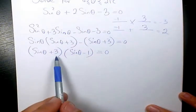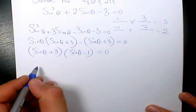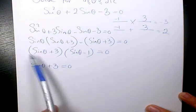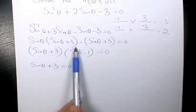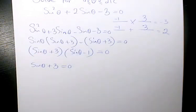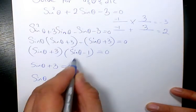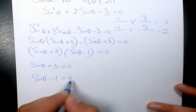The multiplication of two expressions equals to 0. It means that either this one is 0 or this expression equals to 0. Why? Because you know 0 times any expression is 0. The second one is sinθ - 1 = 0.